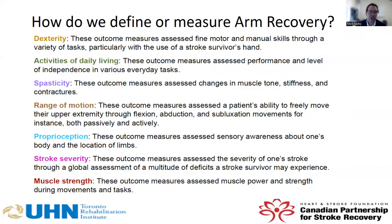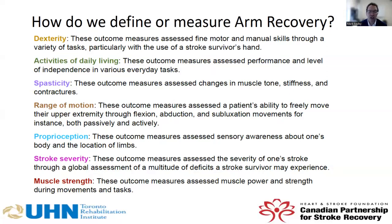We can also look at how well the person has recovered from a range of motion point of view, examining the range they can take their shoulder, arm, or elbow through passively and actively. Stroke can also negatively affect a person's sensation and proprioception — their sensory awareness of the position of the body and limbs. Measures of sensation and proprioception are therefore important outcomes.